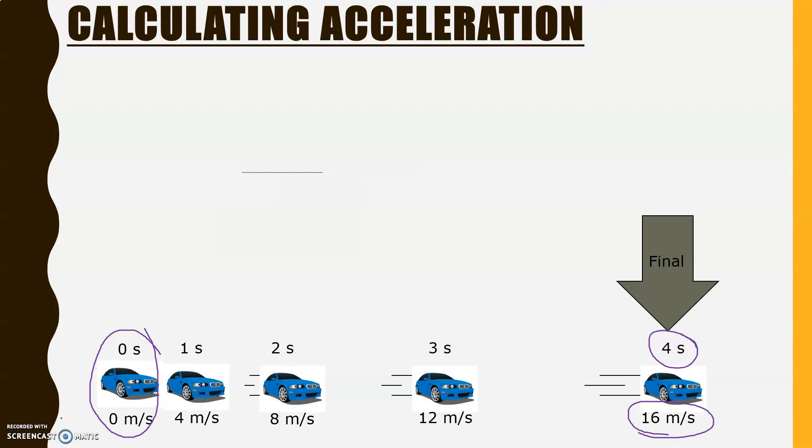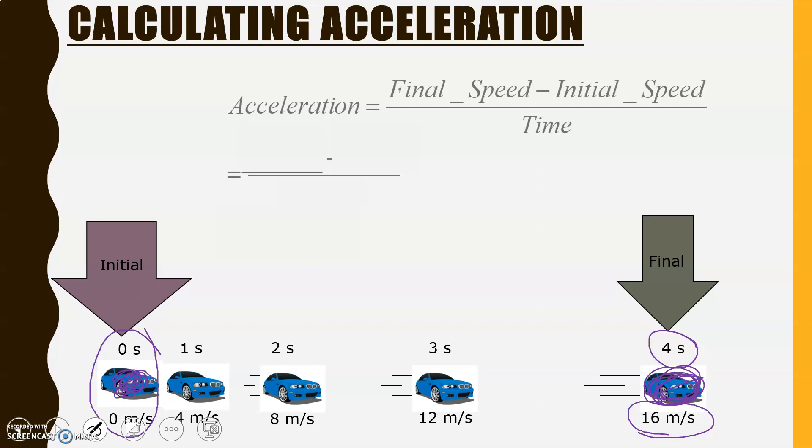Alright, when calculating acceleration, remember we are always looking at the final position. So, over here, where the car lasted the four seconds at the end. And then it's initial position, so where the car started. Zero seconds, zero meters per second. It started at a stop. So, same formula. Acceleration equals final speed minus initial speed, all divided by time.